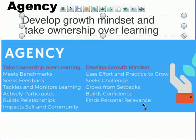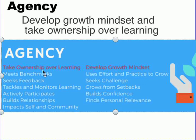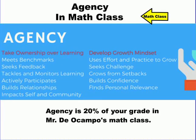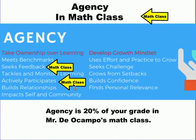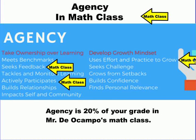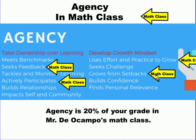Now in all classes, not just math, agency has all these parts. But your math teacher will only focus on a few of these for grading — such as the ability to seek feedback from other people, actively participating, using effort and practice to grow, and growing from setbacks.